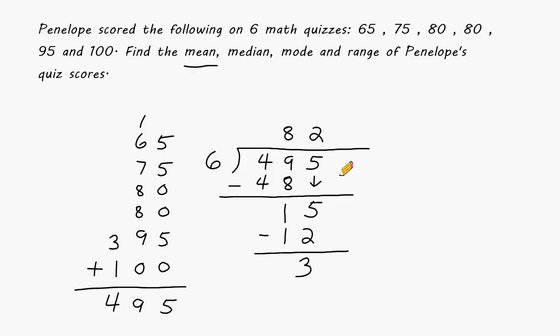Because there's nothing else to drop down, we are simply going to add a decimal in this location, and a decimal in this location, and a zero in the very next place value. We're going to drop that place value down, and we are going to continue our division. 6 can fit into 30 5 times. And because it fits in exactly 5 times, we can stop right here and say that the mean score is 82.5.